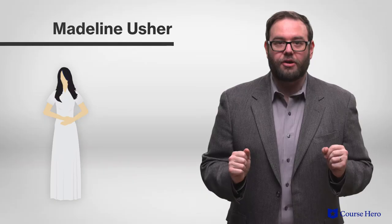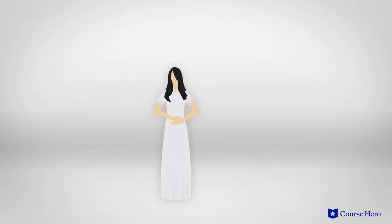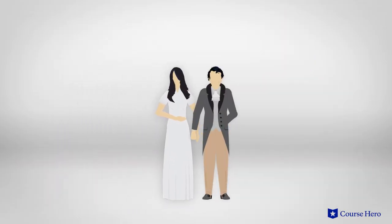Roderick is bound to his sister Madeline, another key character. As twins, they were born together. As adult siblings, they live together. As people who are functionally two parts of a single whole self, they also become sick and die together.